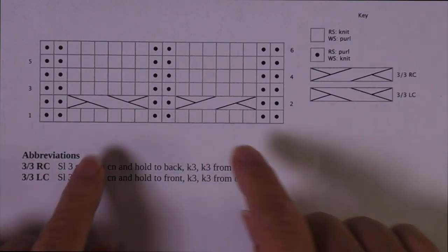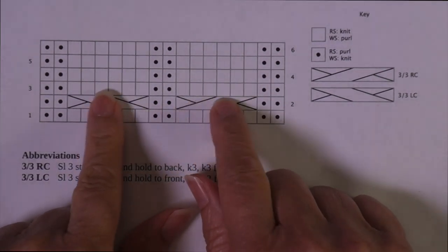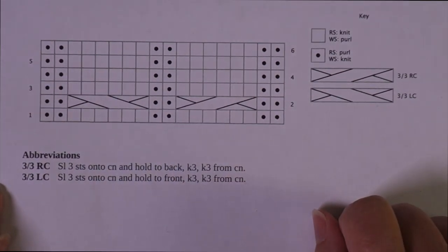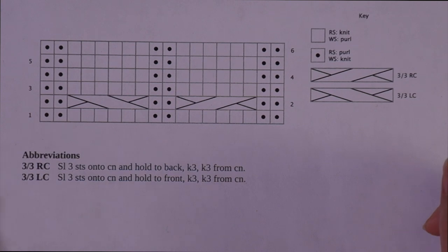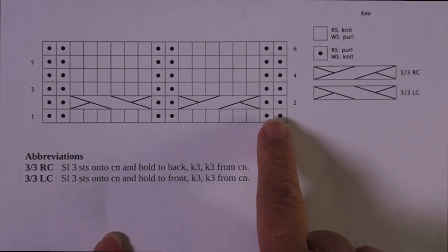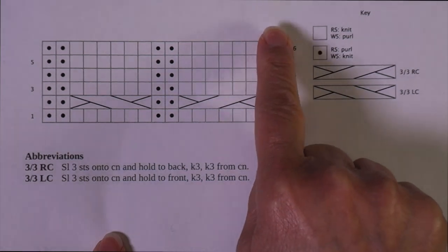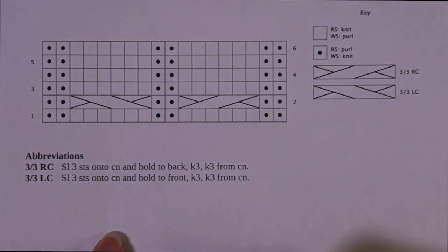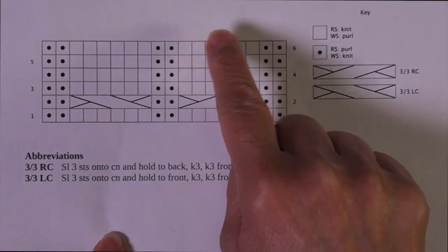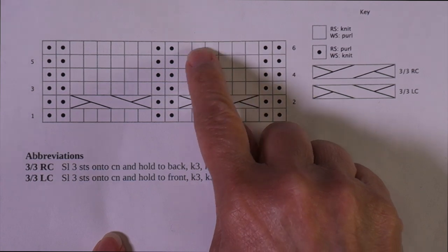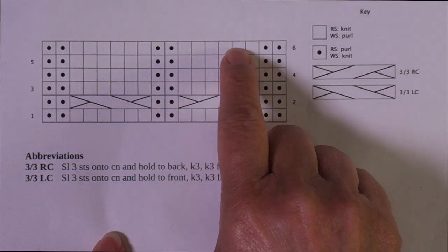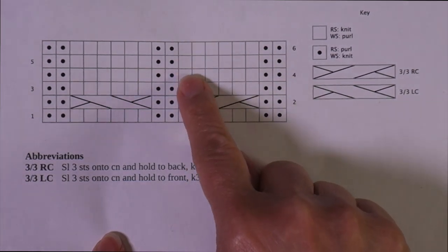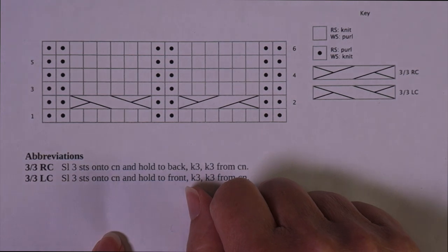Before we try to decipher what these two cable symbols are telling us, let's look at all of the other information we can tell from the chart based on what we've learned previously. We can see that we have columns of two purl stitches going up the chart, and then we can see a column of six stitches wide — one box represents each stitch — and because these are blank boxes, that represents stockinette.